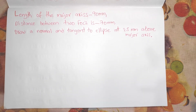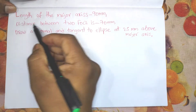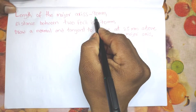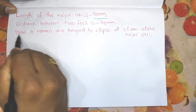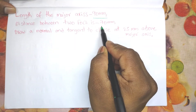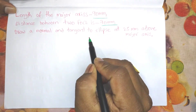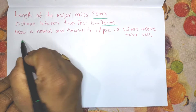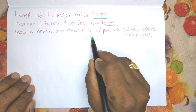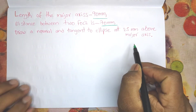Welcome back guys. We have a given data. The length of the major axis is 90mm. The distance between two focus points is 70mm. The question is: draw a normal and tangent to the ellipse at 25mm above the major axis.